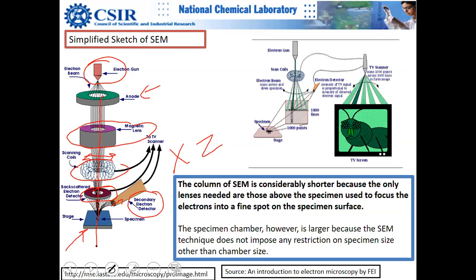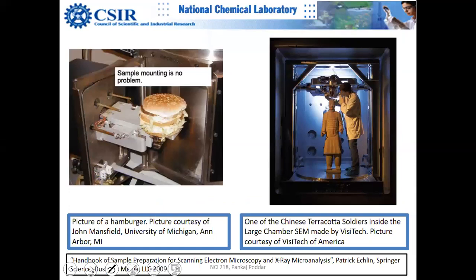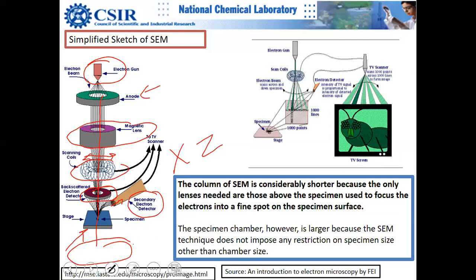There is no optical system below the specimen in SEM, and you can see it is very small. That makes the sample stage fairly flexible. You can make it bigger and mount any type of sample, and you can make the entire sample environment much bigger.